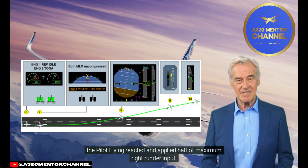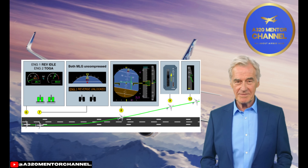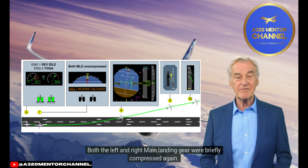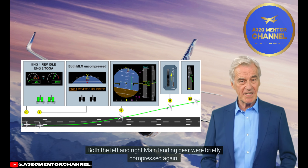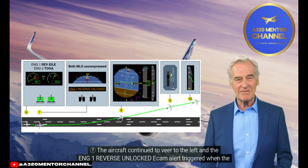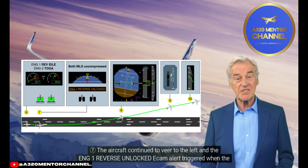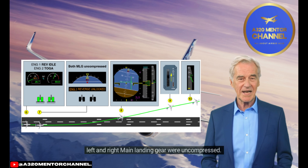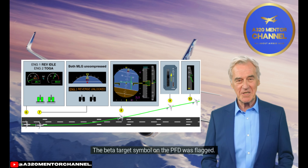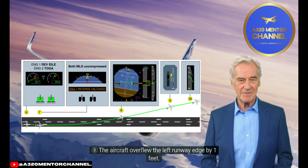The pilot flying reacted and applied half of maximum right rudder input. Both the left and right main landing gear were briefly compressed again. Step 7: The aircraft continued to veer to the left and the ENG-1 REVERSE UNLOCKED ECAM alert triggered. When the left and right main landing gear were uncompressed, the beta target symbol on the PFD was flagged.